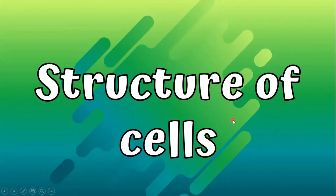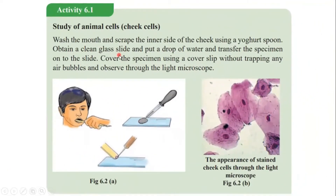Let's discuss activity number one in your textbook: study of animal cells. The steps are: wash the mouth and scrape the inner side of the cheek using a yogurt spoon. Obtain a clean glass slide, put a drop of water, and transfer the specimen onto the slide. Cover the specimen using a cover slip without trapping air bubbles and observe through the light microscope.